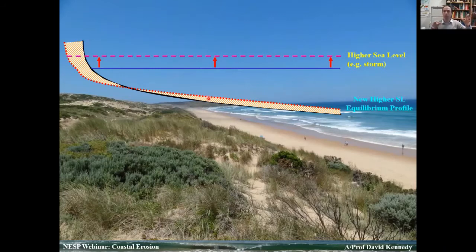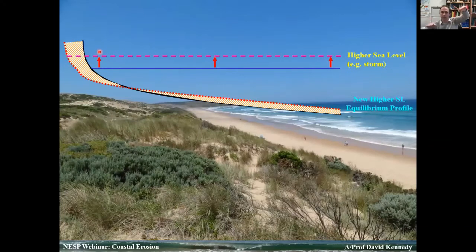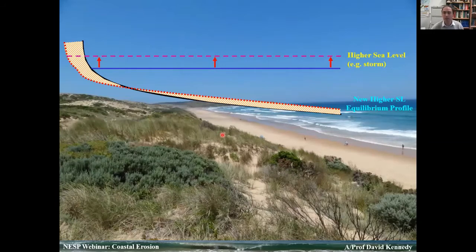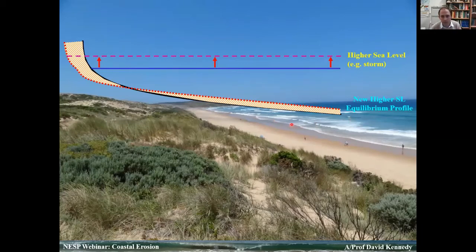During higher energy events, our beaches flatten out to reduce wave energy. As energy wanes, the beaches progressively steepen. You tend to get flatter beaches during storm events. A lot of that response is occurring way offshore, where our sand is actually moving to. The store of sand to do that is the beach face — the bit you walk on is actually a small proportion of the entire beach system. Most of it is offshore. The sub-aerial beach is the store of sand for storm events and for each individual wave that comes in.